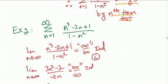I'm still indeterminate, so I do what we call it one more time, and I'm going to get 6n over negative 2. And since n is approaching infinity—